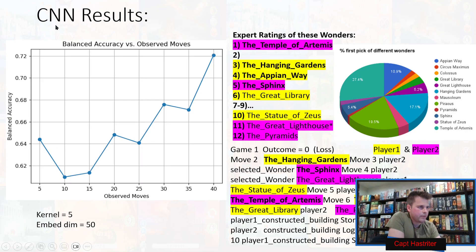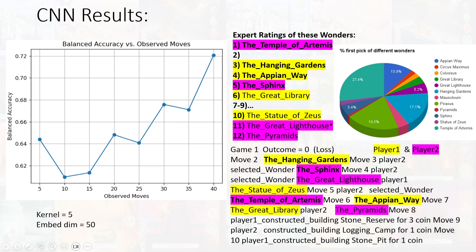The convolutional neural network results show a 72% accuracy. That was the highest we ever got. There was a drop between five and 10 observed moves.